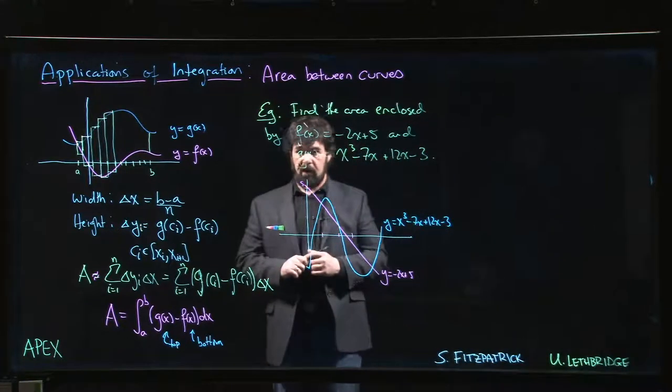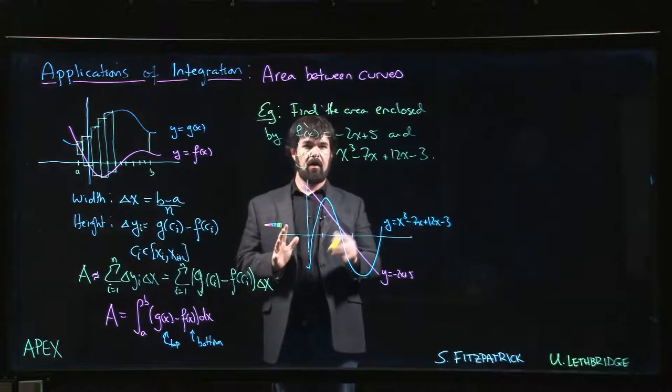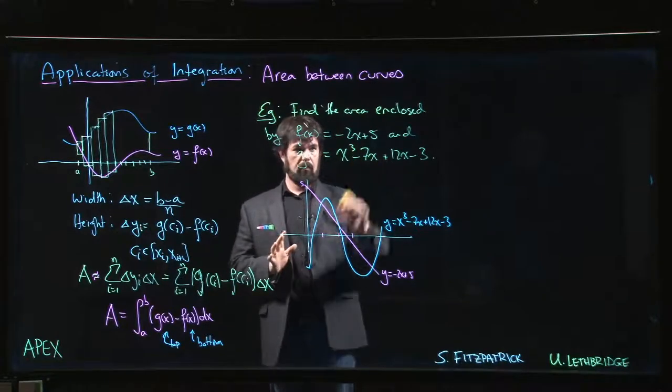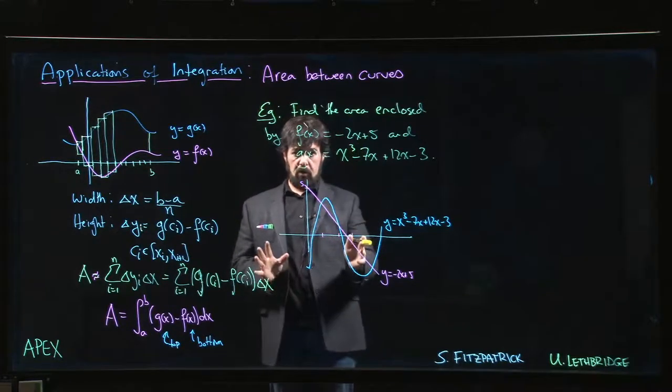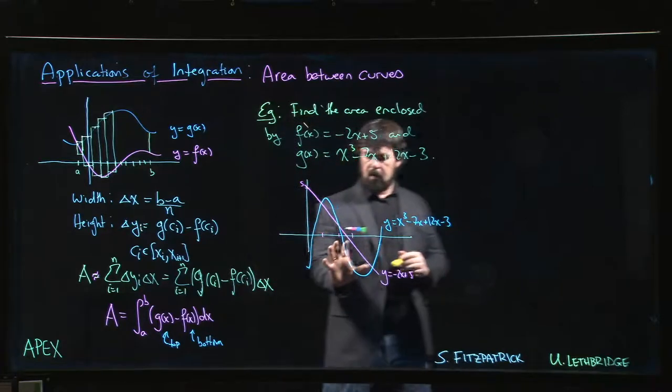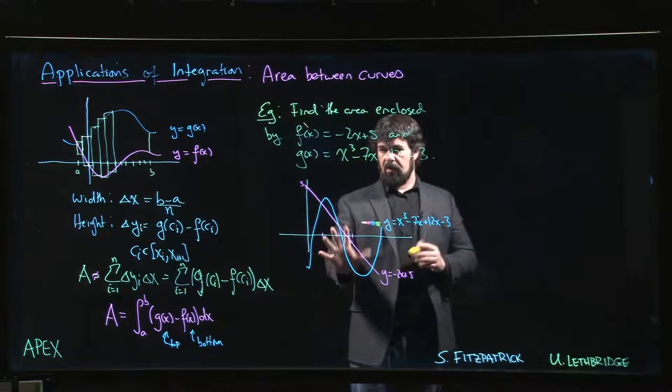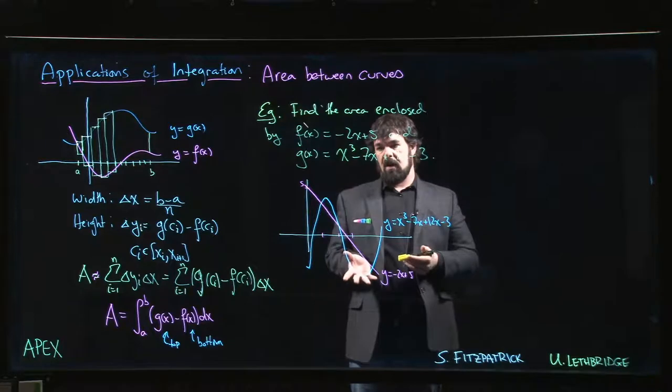So here is a more challenging area problem. We want to find the area enclosed by these two graphs. One is a line, one is a cubic polynomial. There are two things that make this more difficult than the last one.